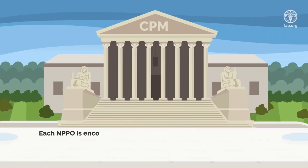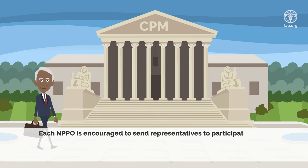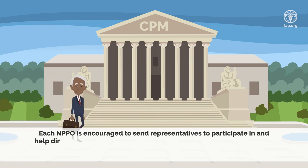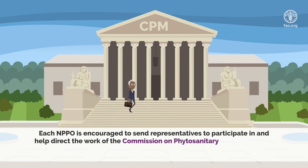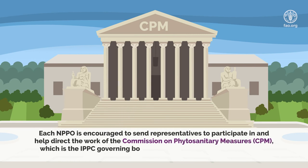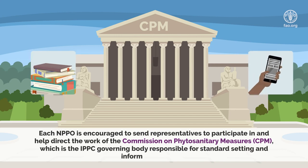Each national plant protection organization is encouraged to send representatives to participate in, and help direct the work of the Commission on Phytosanitary Measures, which is the International Plant Protection Convention governing body responsible for standard setting and information sharing.